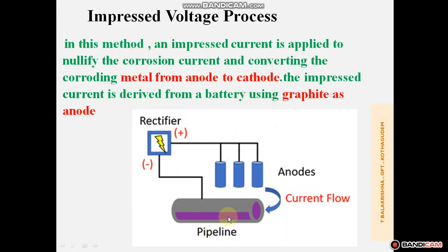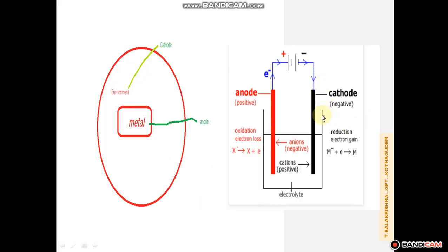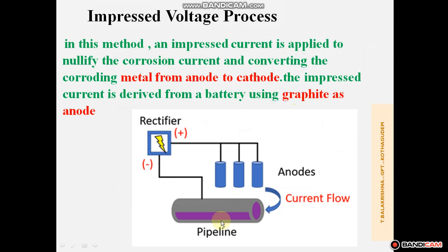Take underground pipelines as an example. When an underground pipeline is exposed to the environment, the pipeline acts as anode and the environment acts as cathode, so corrosion takes place in the underground pipeline. To prevent corrosion, one method is to connect it to an active metal. Another method is to connect this pipeline to the negative terminal of the power supply. When connected to the negative terminal, as we learned in electrochemistry, it acts as a cathode. So the pipeline is connected to the negative terminal of the battery and automatically becomes cathode. The anodic metal is converted to cathode by applying impressed current — this is called the impressed voltage process.